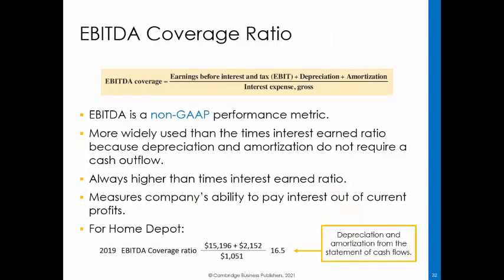Earnings before interest, tax, depreciation, and amortization (EBITDA) is a non-GAAP performance metric commonly used by analysts and investors. Depreciation and amortization, as reported in the statement of cash flows, are added back in the numerator because they are non-cash expenses. The EBITDA coverage ratio will always be higher than the times interest earned ratio because of the add-back of depreciation and amortization. The 2019 EBITDA coverage ratio for Home Depot is 16.5, a healthy ratio and a sign that the company is able to service its debt.